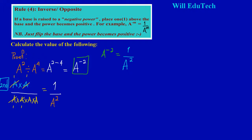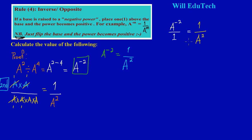So the trick is this: if we have a to the negative two, we can think of it as a to the negative two upon one. All we do is flip it — the one comes to the top and a squared goes to the bottom, and now the power is positive. That's what we mean when we say just flip it.